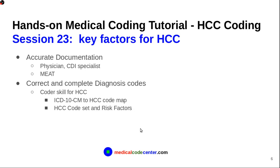The key factors for HCC coding are: first, you must have accurate documentation — this requires effort from both the physician and the CDI specialist, following the MEAT principle. The second key factor is having correct and complete diagnosis codes. The coder plays a really important role here. You have to know how to map ICD-10-CM codes to HCC codes, and also be familiar with the HCC code set and the risk factors associated with each HCC code.